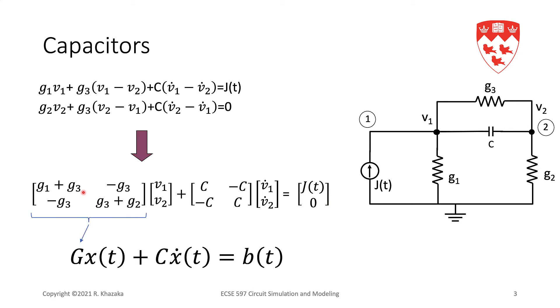We can now write these equations in matrix format by rearranging the terms. What you end up with is the MNA equations of this circuit. This would be the G matrix, and here is my unknown vector X(t), this is its derivative, and this is the C matrix.